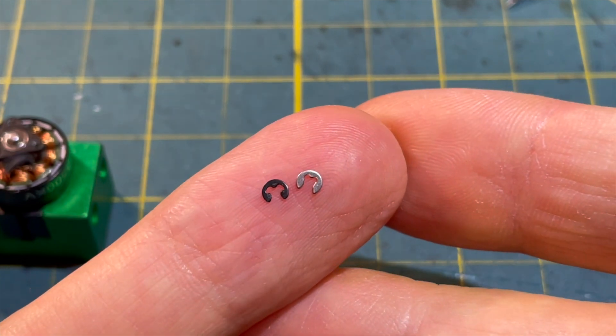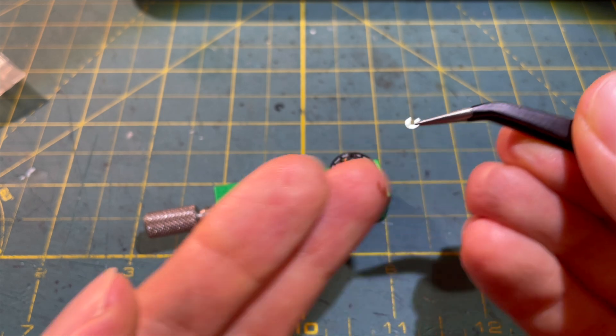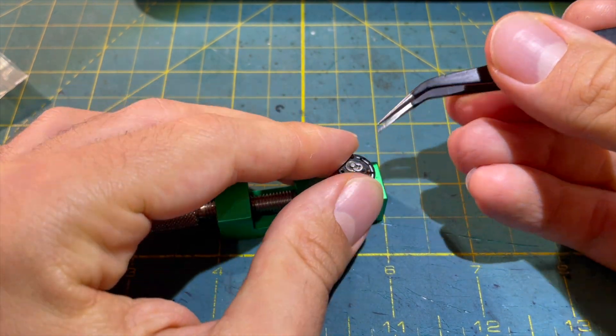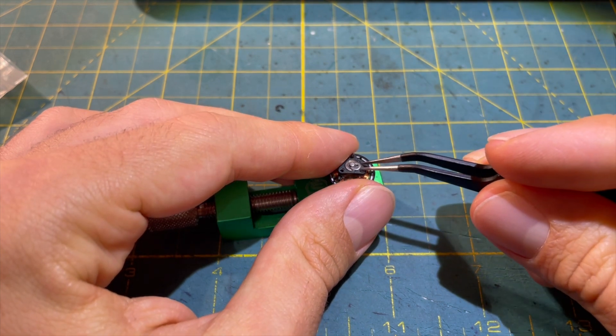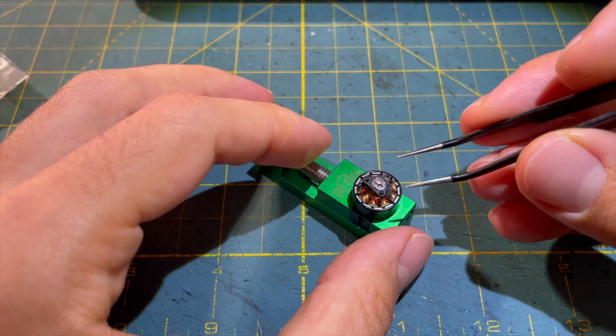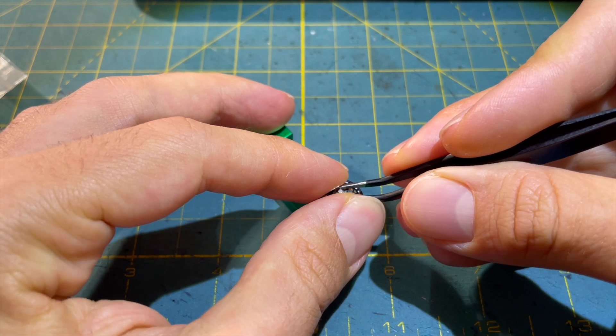When installing the E-clip, you need to make sure to place it precisely in the groove of the motor shaft. Then you can press the E-clip onto the shaft with a pair of tweezers. It's important that the side of the tweezers where the E-clip is open is slightly higher, so the tips of the E-clip can pass under the tweezers.